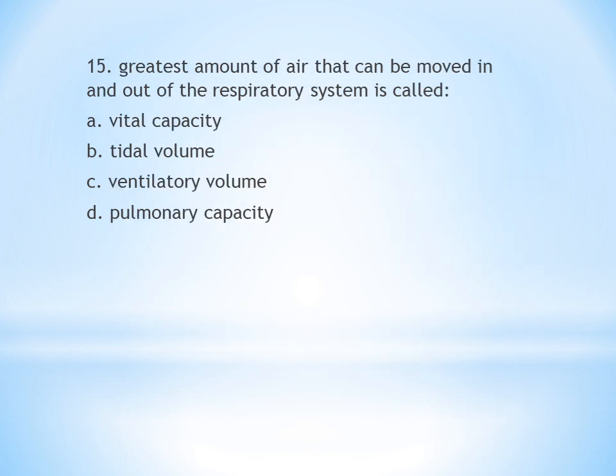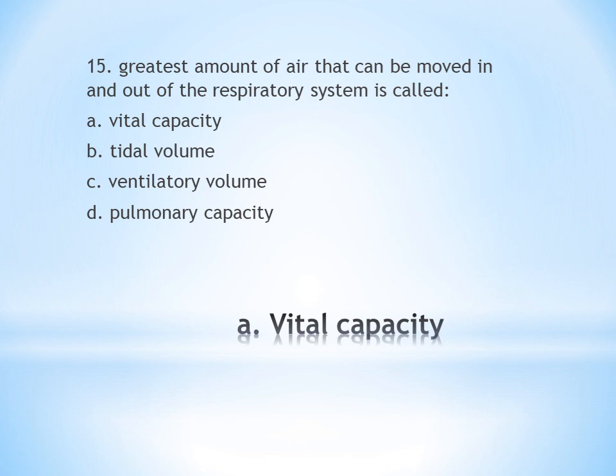Fifteenth question: The greatest amount of air that can be moved in and out of the respiratory system is called: A. Vital capacity, B. Tidal volume, C. Ventilatory volume, D. Pulmonary volume. Answer is A, vital capacity — the combined inspiratory reserve volume, tidal volume, and expiratory reserve volume.